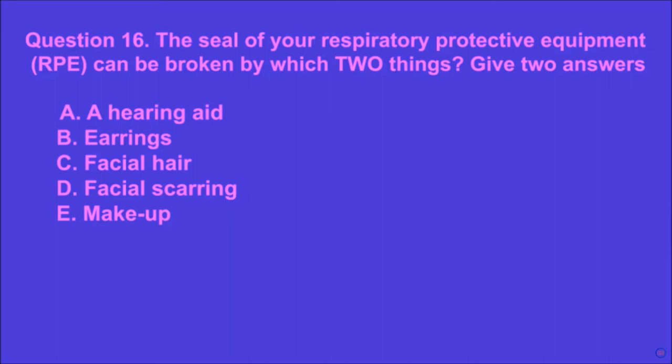Question 16: The seal of your respiratory protective equipment (RPE) can be broken by which two things? Give two answers. A: a hearing aid, B: earrings, C: facial hair, D: facial scarring, E: make up. C and D are the correct answers.